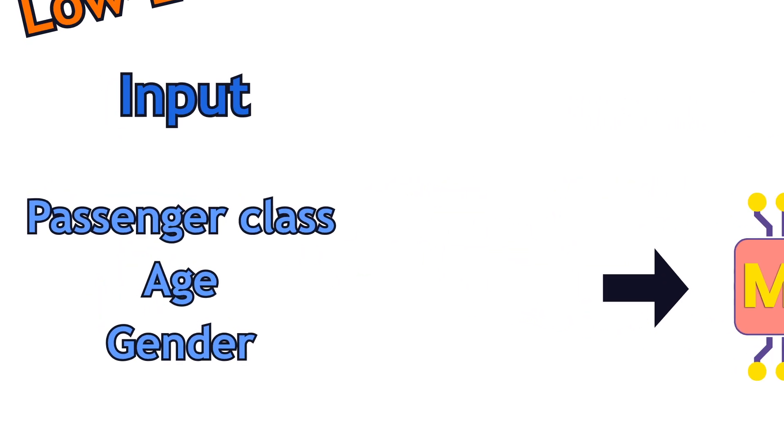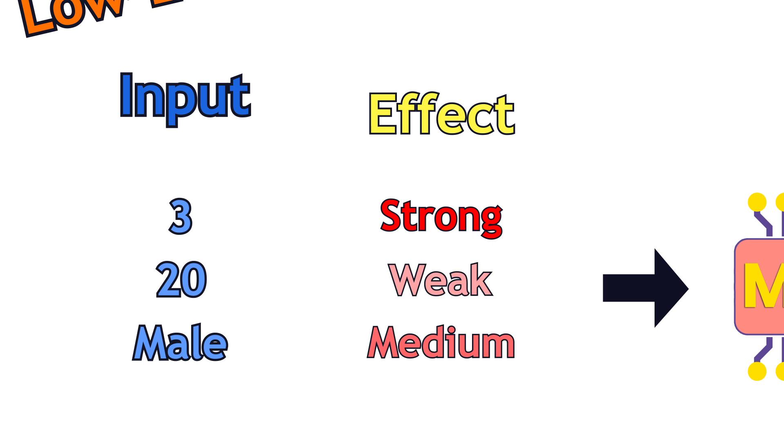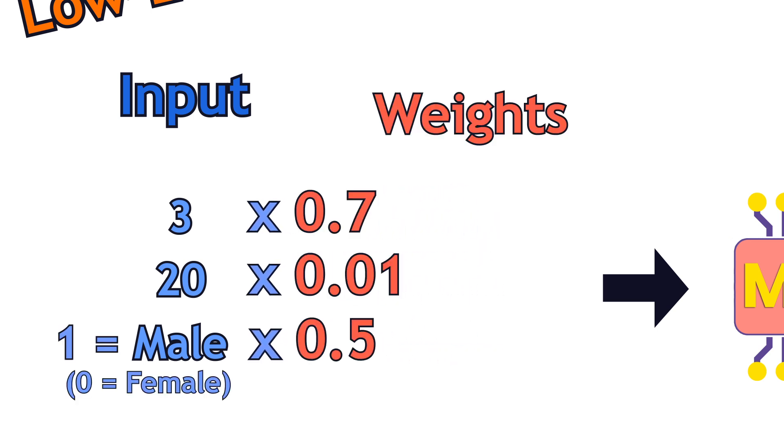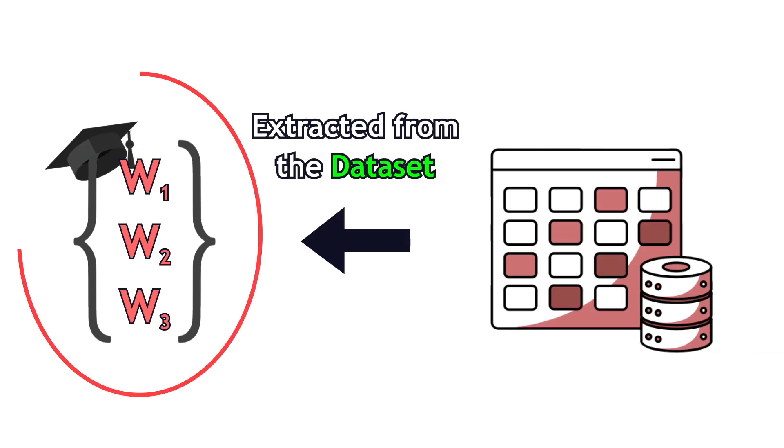Logically, each input feature would have its own effect on the output. By multiplying the input values with their corresponding weights, the model scales the importance of each feature. Those weights contain the knowledge that is extracted from the dataset. Weights are the most important part of AI models. They are often protected with copyrights.